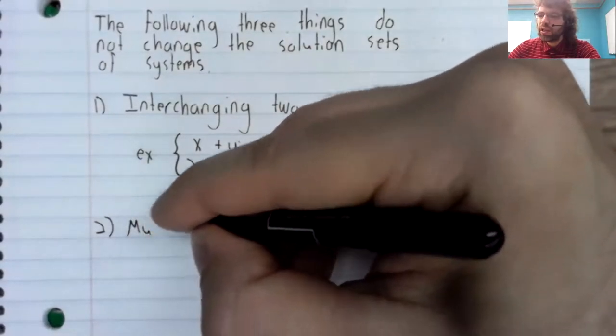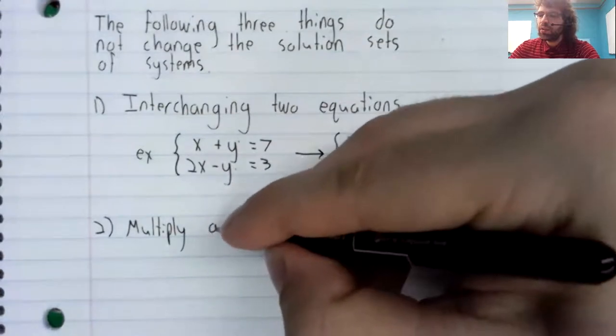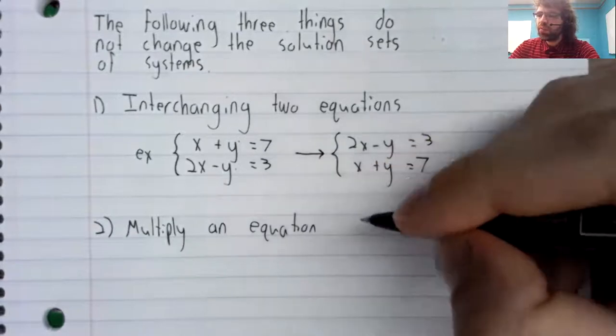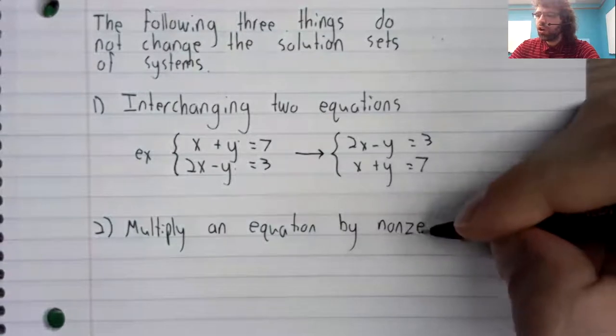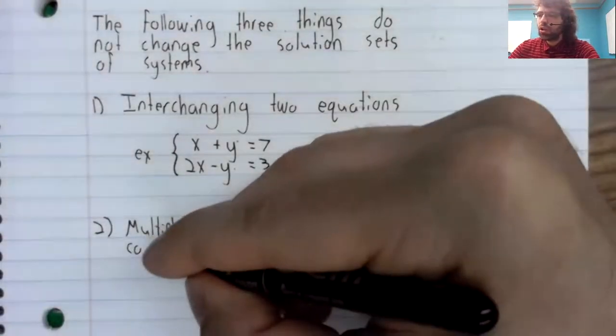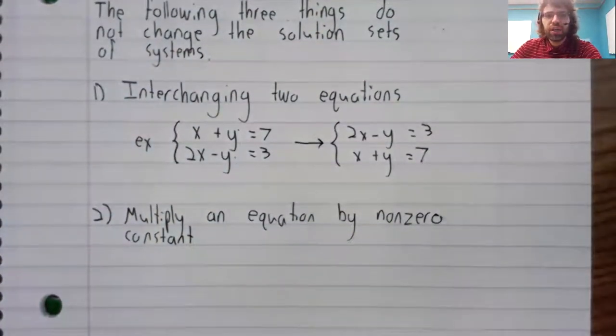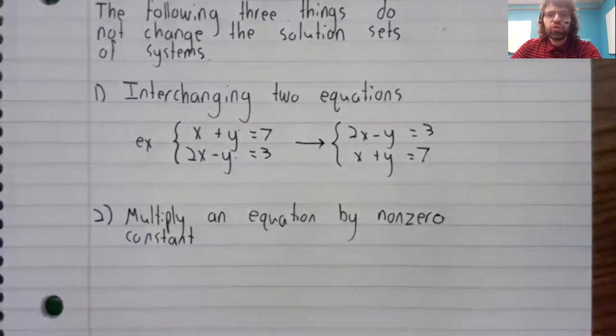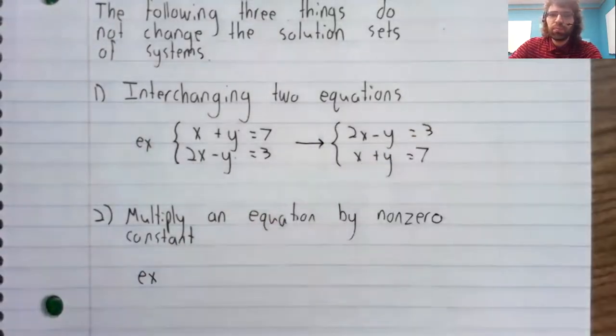We can multiply an equation by a non-zero constant, in the sense that doing that does not change the solution set of the system.